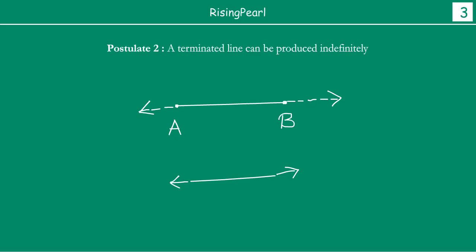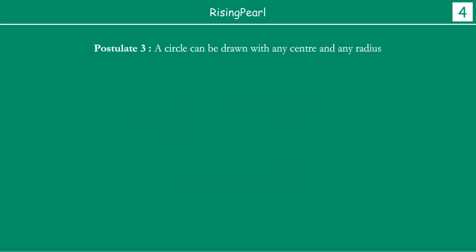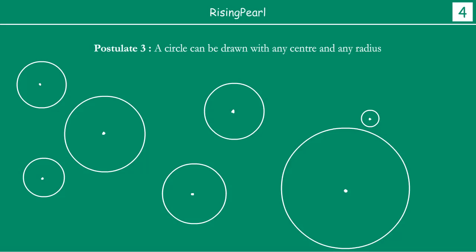Now let us look at the third postulate: a circle can be drawn with any center and with any radius. This is a straightforward one. We have drawn some circles here with different centers and different radii — r1, r2, r3. So what Euclid was saying is that in a plane you can take any point as center, take any amount of radius, and you should be able to draw a circle.